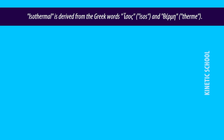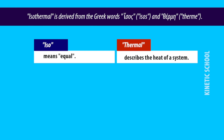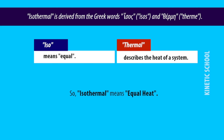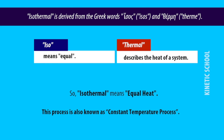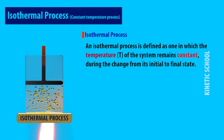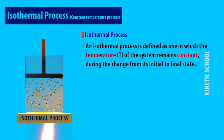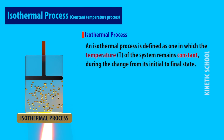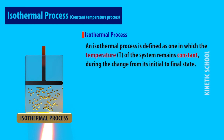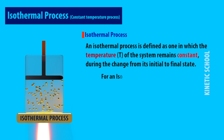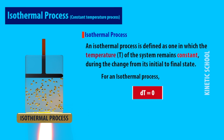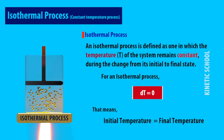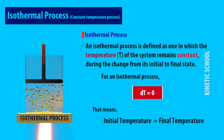Isothermal is derived from the Greek words 'isos' and 'therm.' 'Iso' means equal, and 'thermal' describes the heat of a system, so isothermal means equal heat. This process is also known as constant temperature process. An isothermal process is defined as one in which the temperature of the system remains constant during the change from its initial to final state. For an isothermal process, dT is equal to zero — meaning the initial and final temperature in this process is the same.